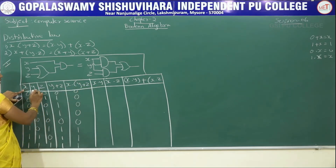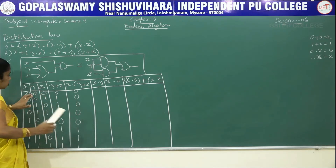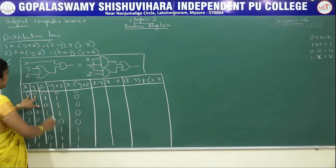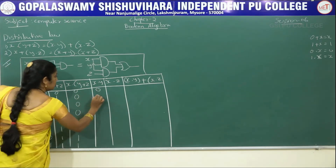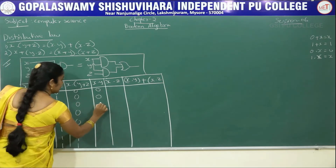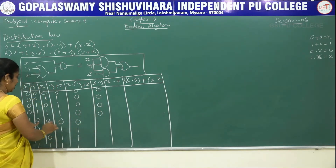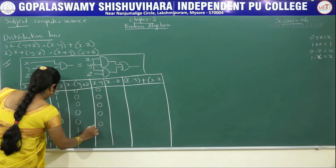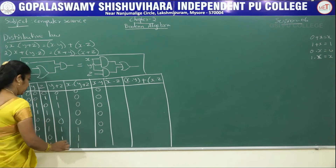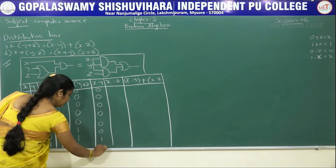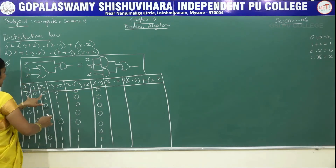Calculating x·(y+z): 0·0=0, 0·0=0, 0·1=0, 0·1=0, 1·0=0, 1·1=1, 1·1=1, 1·1=1. Now for x·y, we take x and y columns — dot operator means all inputs must be 1: 0·0=0, 0·0=0, 0·1=0, 0·1=0, 1·0=0, 1·1=1, 1·0=0, 1·1=1.